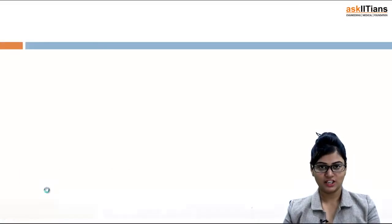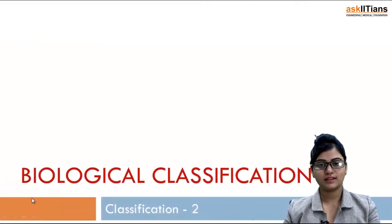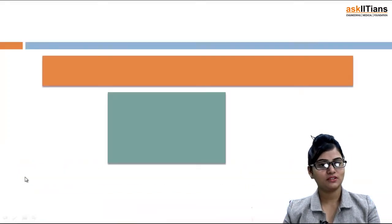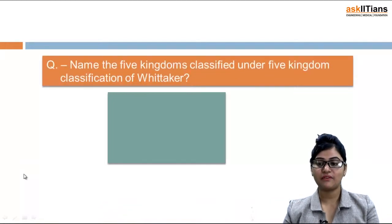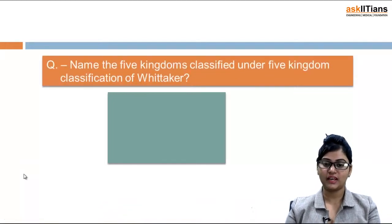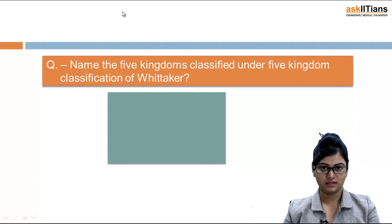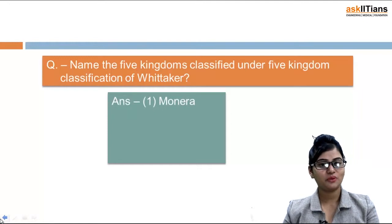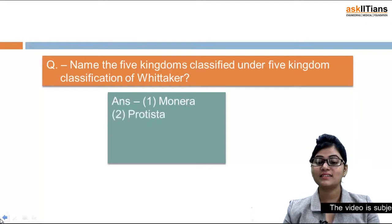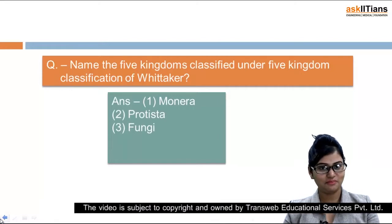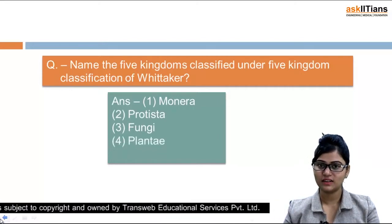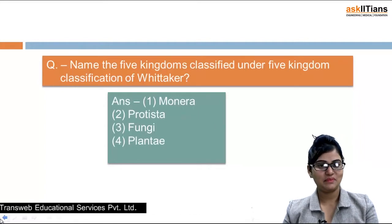We are now taking classification part two. The five kingdoms classified under Whittaker's five kingdom classification are: first is Monera, second is Protista, third is Fungi, fourth is Plantae, and the fifth is Animalia.